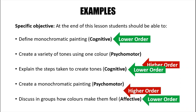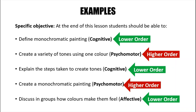Now let's look at the higher order objectives. The verb 'create' signals that students are applying the information they have gathered. The first higher order objective says: 'create a variety of tones using one color' — students have to apply their understanding of colors to create tones. The next objective says 'create a monochromatic painting,' which forces them to use the skill sets and information they have gathered.